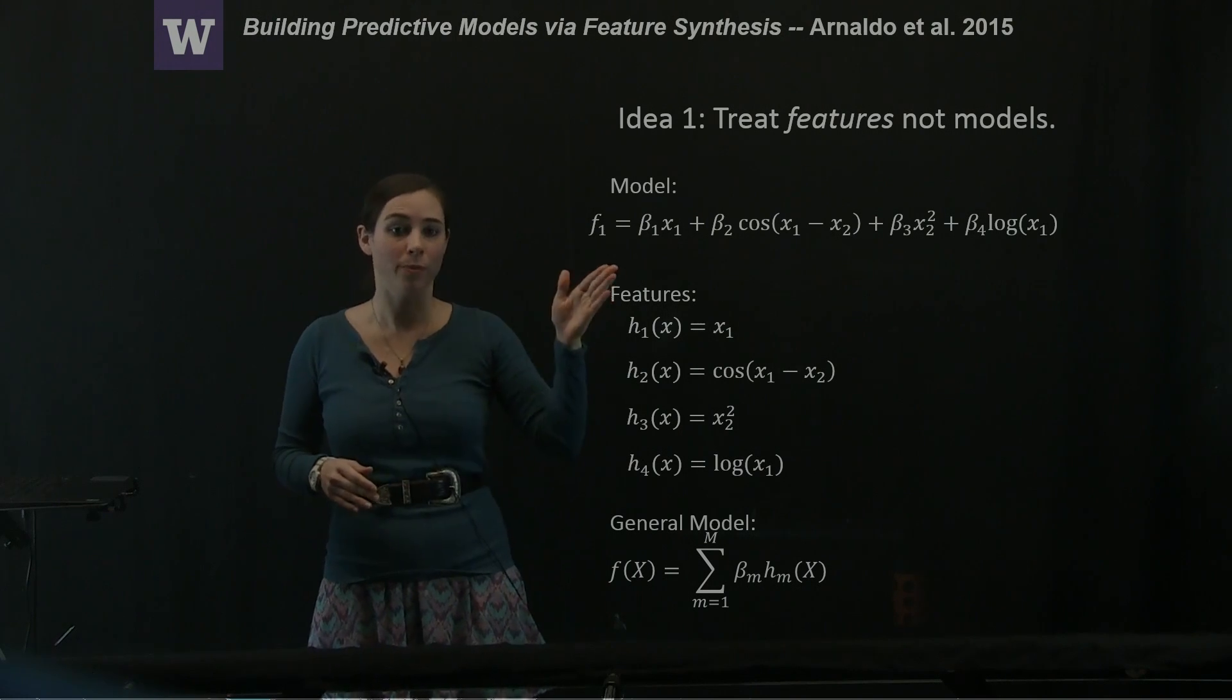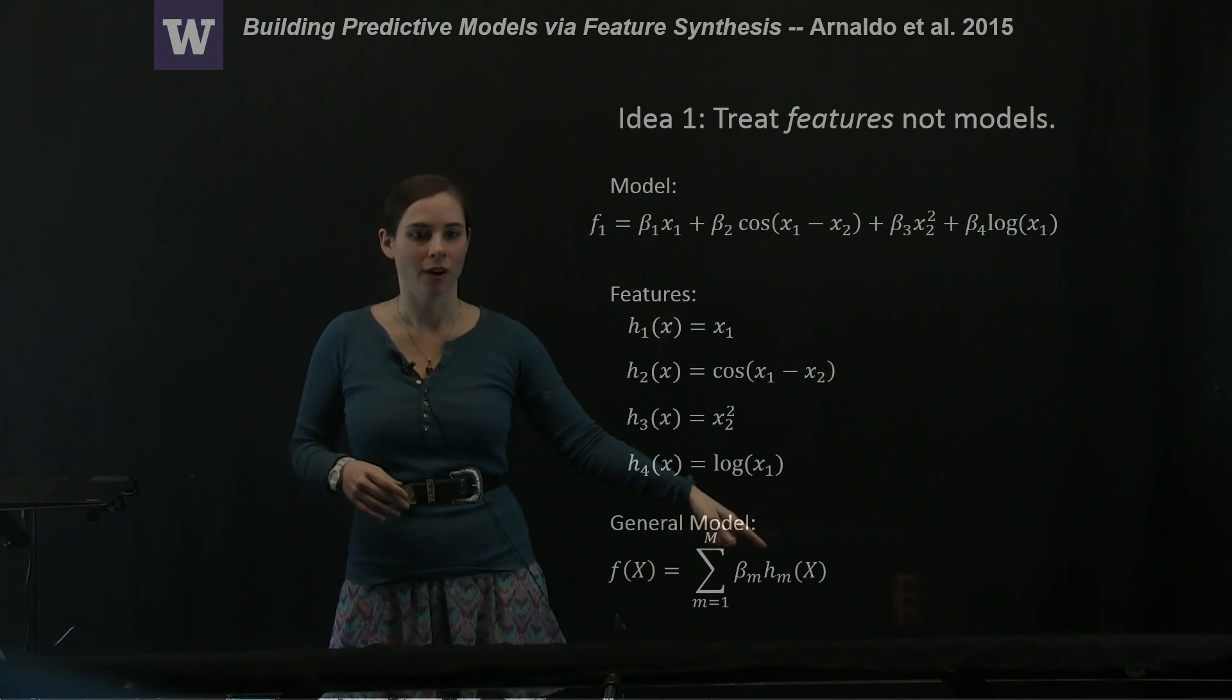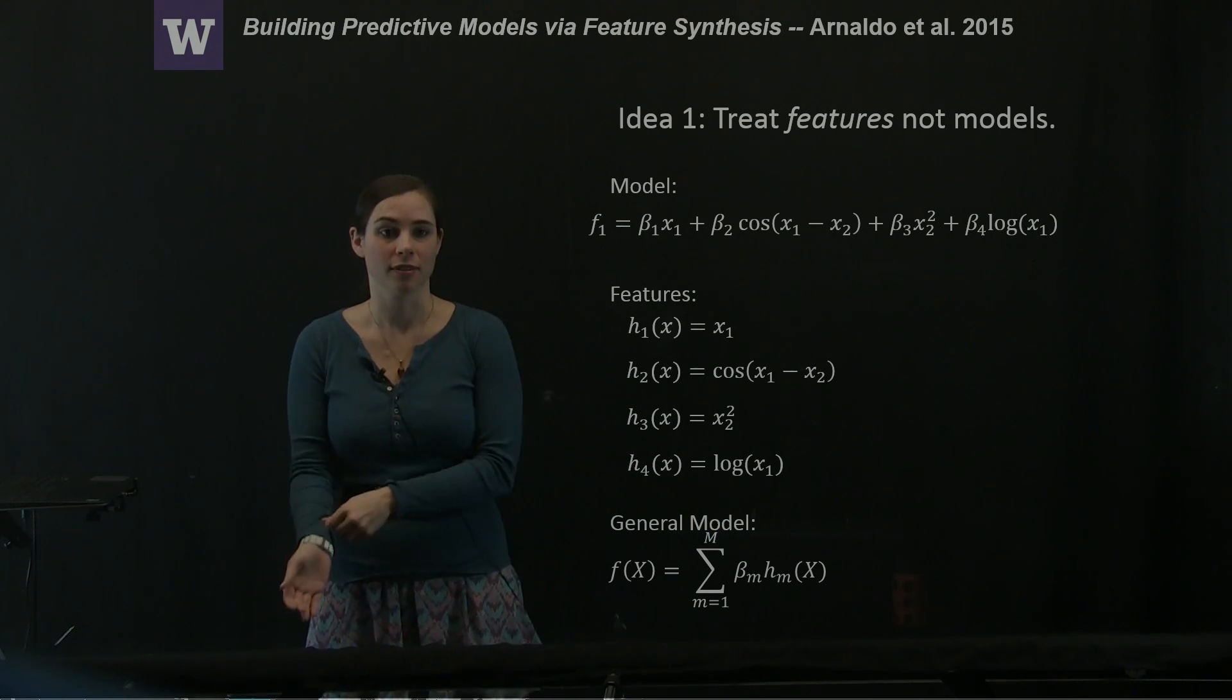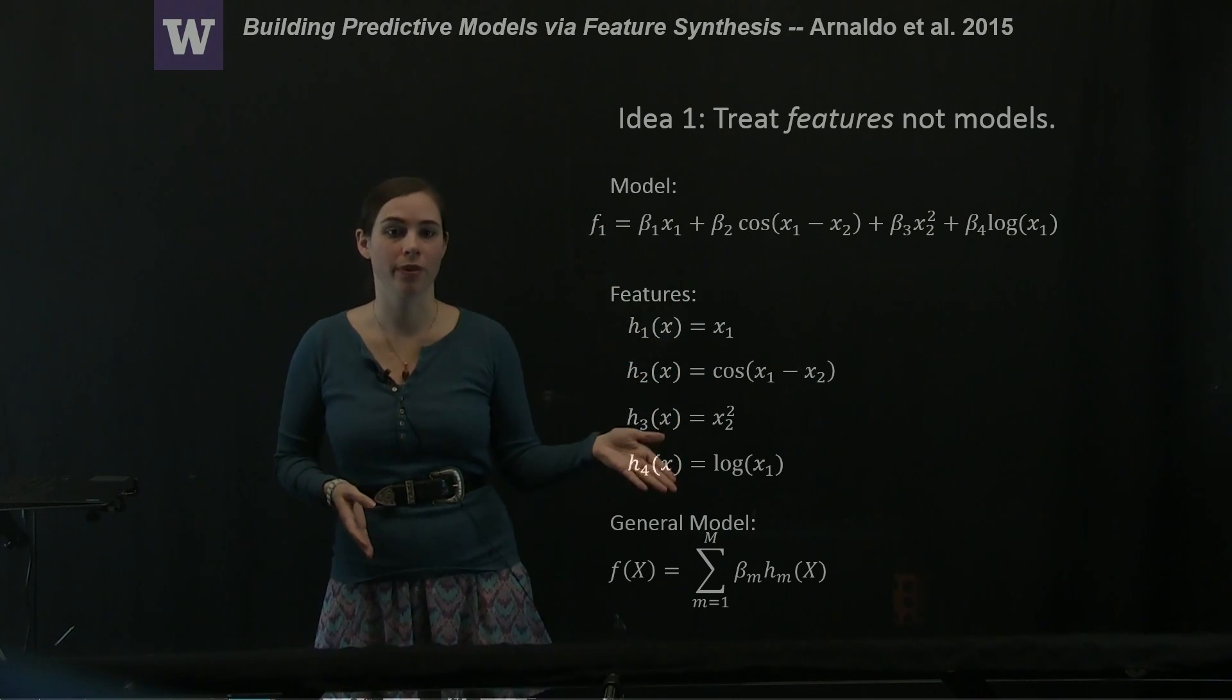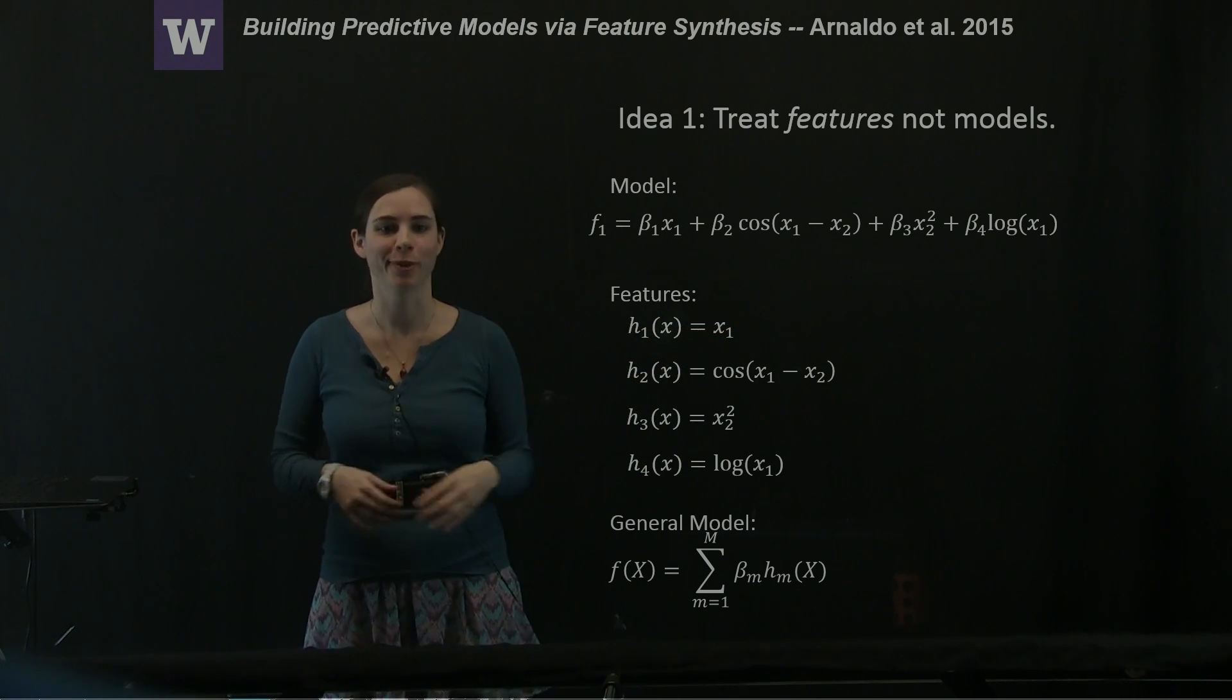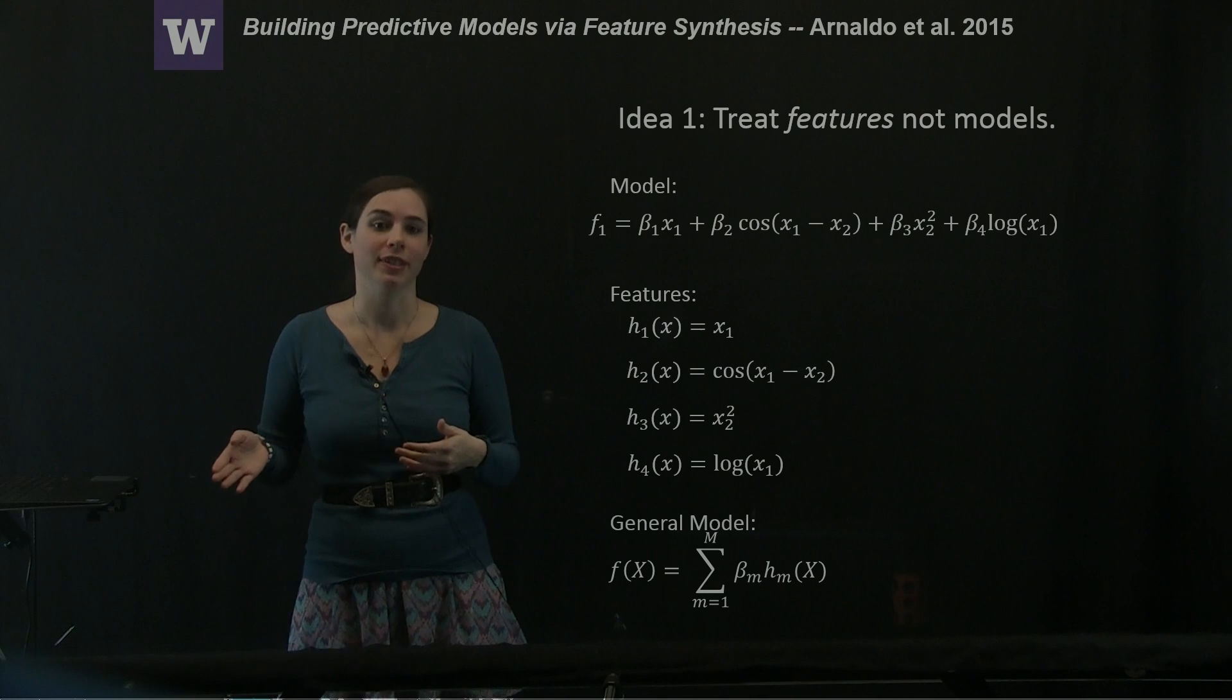In order to compose, or in order to turn all of these features into a model, we just do a linear combination of all of those features weighted by these beta coefficients. And one of the things to note is that you don't need to store these features symbolically because when we started, the data we had, x1, was just some vector of x1 values that we got experimentally.